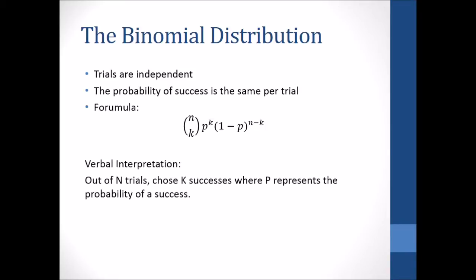Out of n trials, choose k successes where P represents the probability of success. And so by the complement, 1 minus P, or 1 minus the success rate, must be the failure rate.